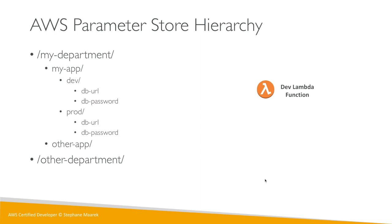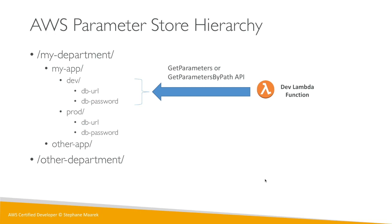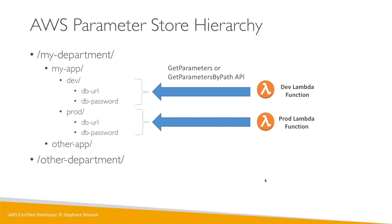If you have a dev Lambda function and want dev parameters, you use the GetParameters or GetParametersByPath API — just remember these two APIs. A dev function asks for dev parameters and a prod function automatically asks for prod parameters. This way you can differentiate parameters for different environments, giving you clear separation of duties and roles.